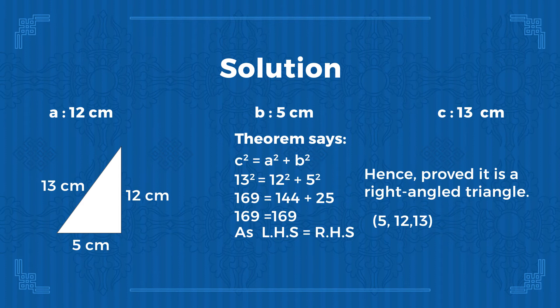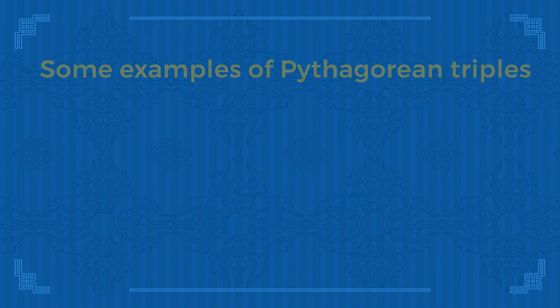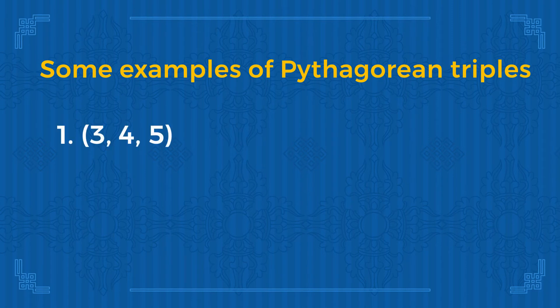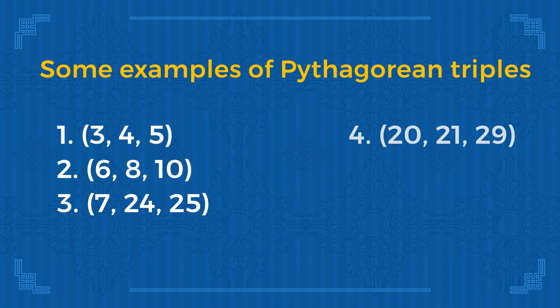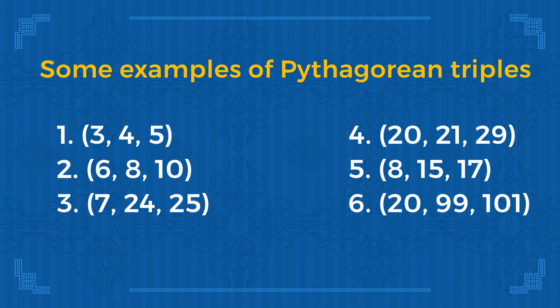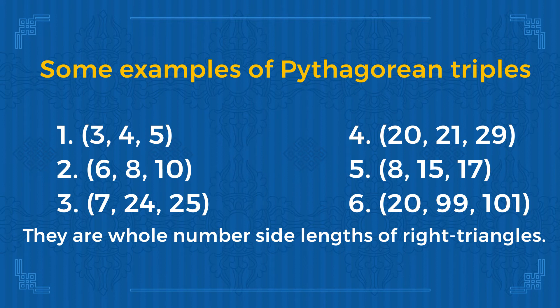The side lengths 5, 12, and 13 are called Pythagorean triples. There are more examples of Pythagorean triples: 3, 4, 5; then 6, 8, 10; then 7, 24, 25; then 20, 21, 29; then 8, 15, 17; and finally 20, 99, and 101. These are called Pythagorean triples because they are whole-number side lengths of a right triangle. Now you know how to apply the Pythagorean Theorem to check whether a triangle is a right triangle, and you know some Pythagorean triples.